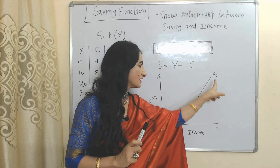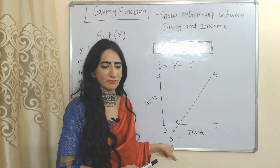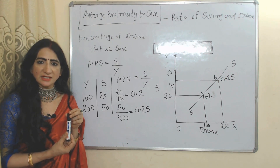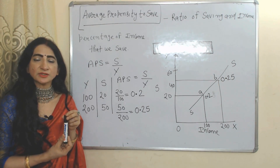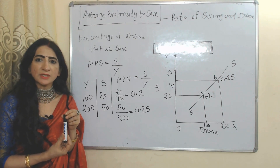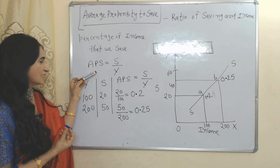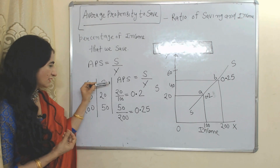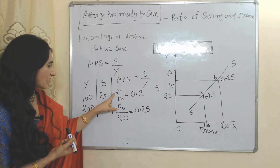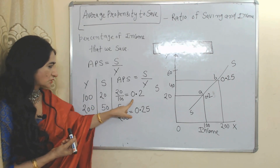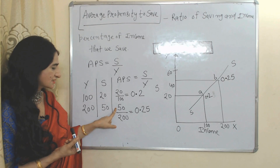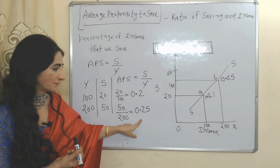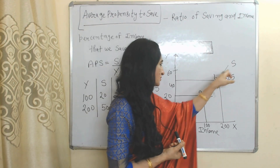At point E, saving is zero. But as income increases, saving also increases. This SS curve represents the saving curve. Now we will see the average propensity to save (APS). APS is the ratio of saving to income — it shows the percentage of income that we save. The formula is S over Y. In the first case, S is 20 and Y is 100, so APS is 0.2. In the second case, S is 50 and Y is 200, so APS is 0.25.